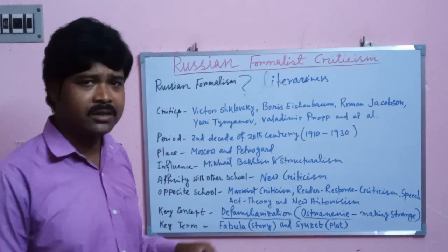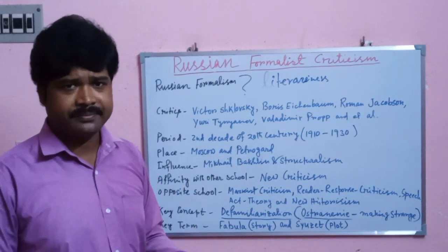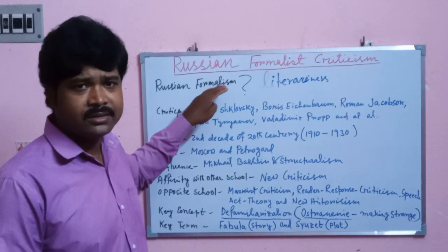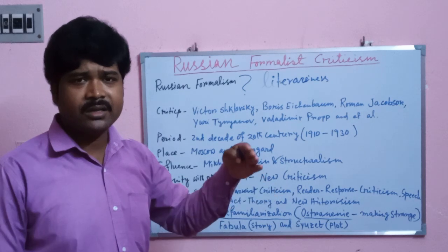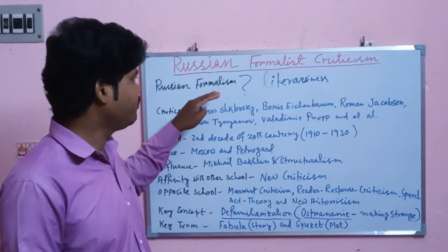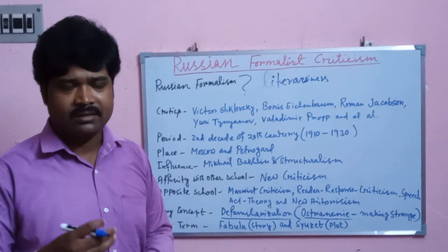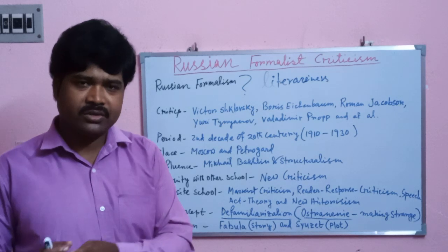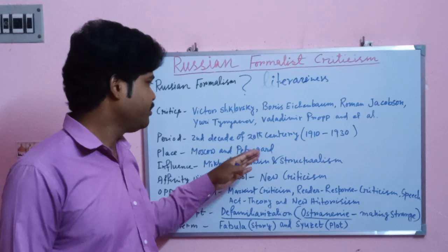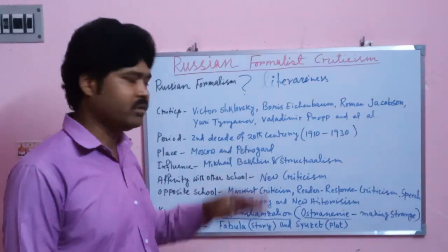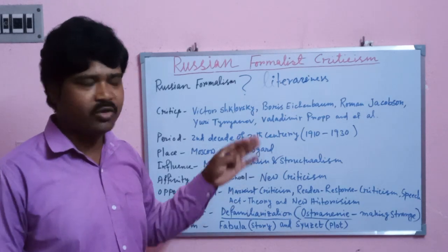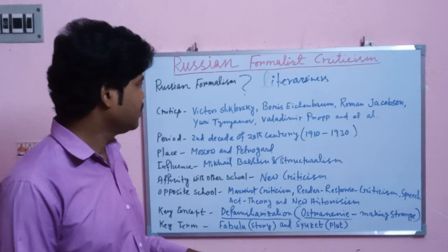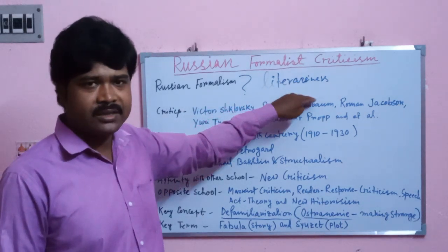Russian Formalism was constituted by two literary groups: one is the Moscow Linguistic Circle in Moscow, and the other is the Society for the Study of Poetic Language in St. Petersburg, or Petrograd. These two groups formed, at the initial stage, Russian Formalist criticism. Literariness of literature is their prime concern — this is what they analyze in their theory.